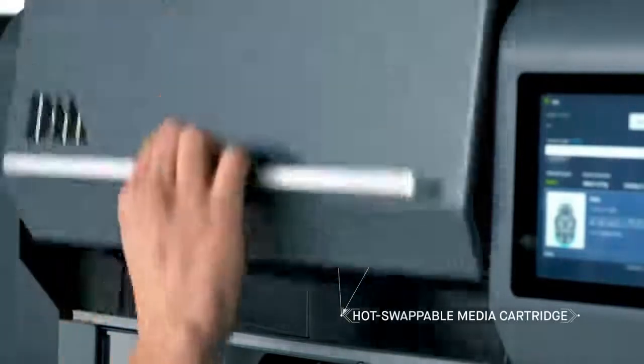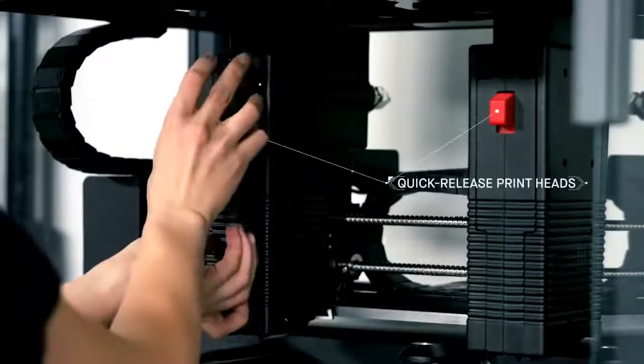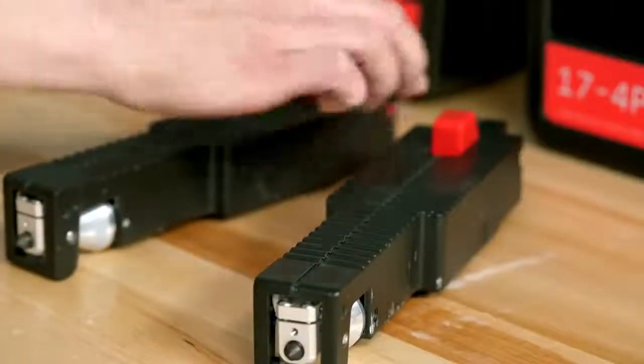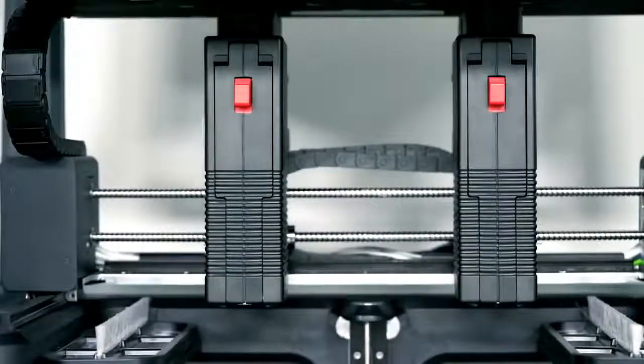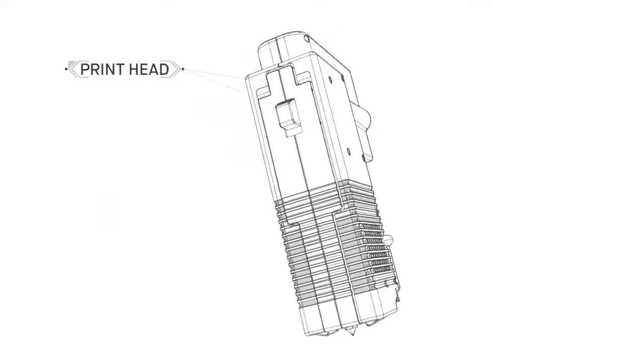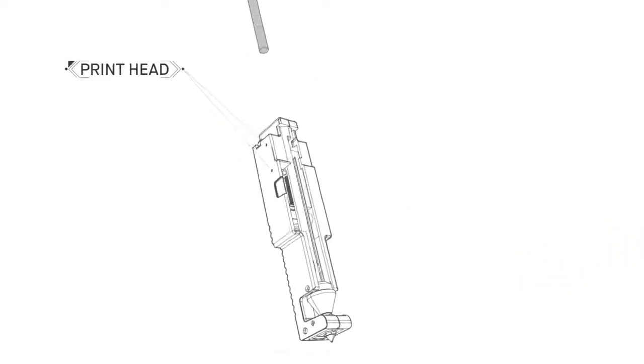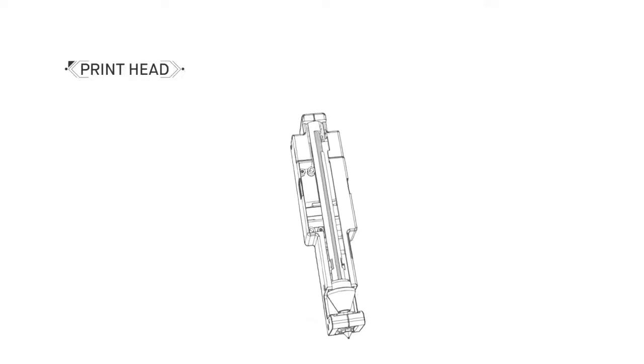Safe to handle, hot-swappable media cartridges and quick-release printheads allow for easy material changes in a matter of minutes instead of hours or even days with other systems. In a process called bound metal deposition, metal rods—metal powder held together by wax and polymer binder—are heated and extruded onto the build plate.